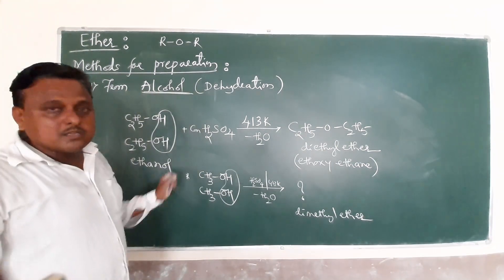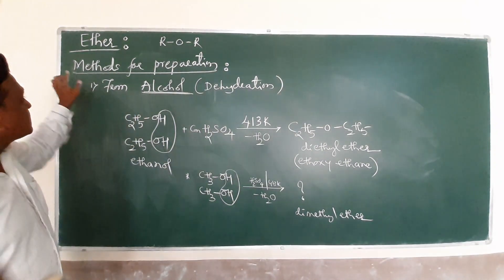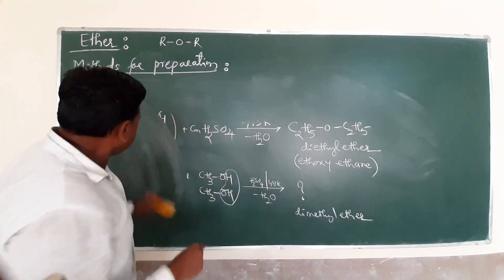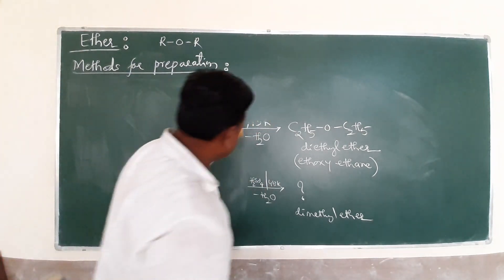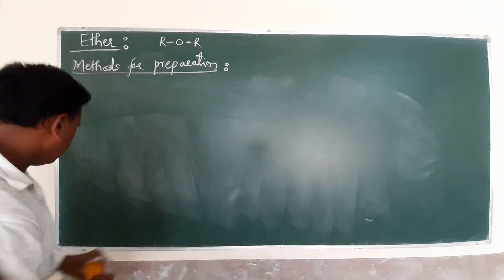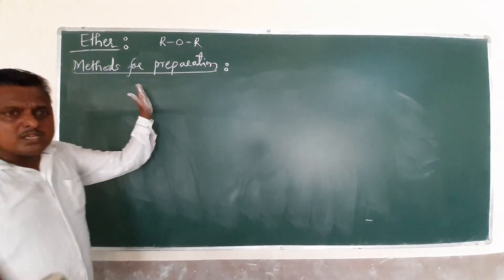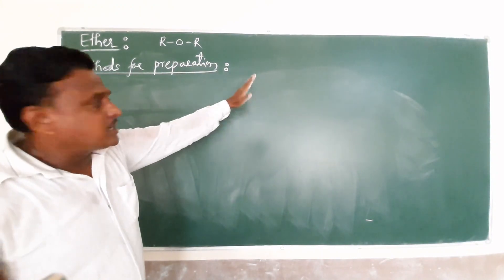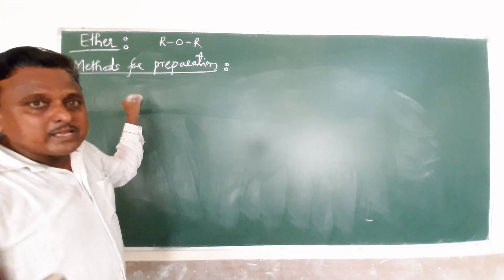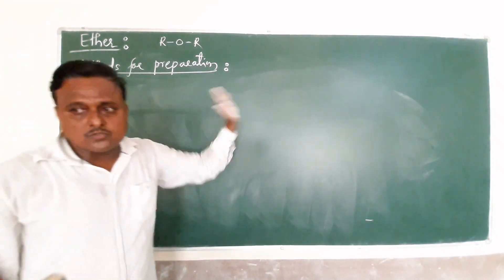This is the simplest part of your syllabus - the first method for preparation. After this, we have several methods. In this chapter, we have dry silver oxide technique and another is the Williamson ether synthesis. The very important reaction in your syllabus is Williamson ether synthesis, which will be prepared in the next video. Thank you.